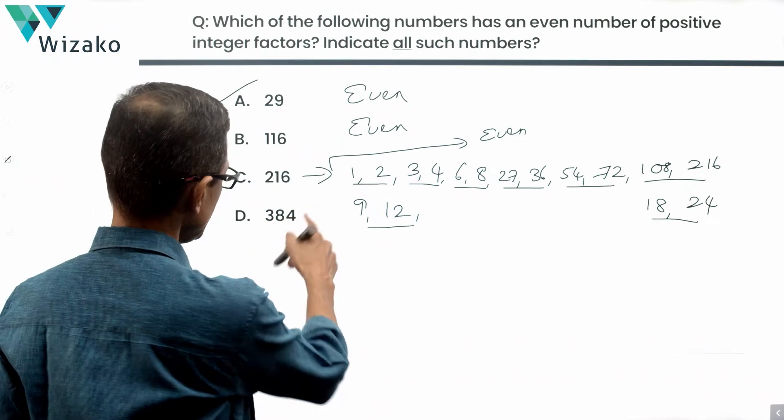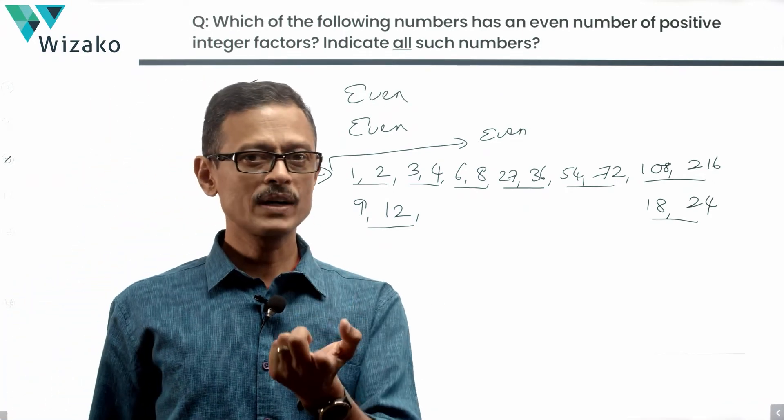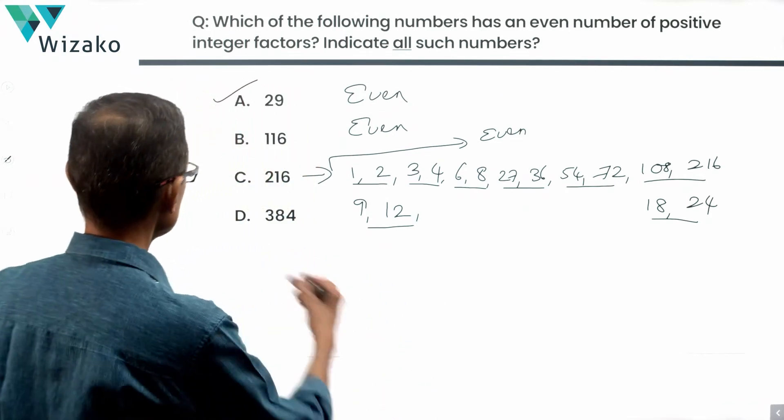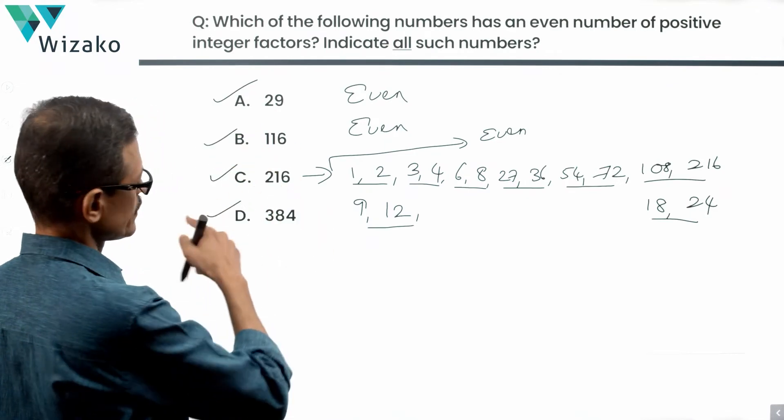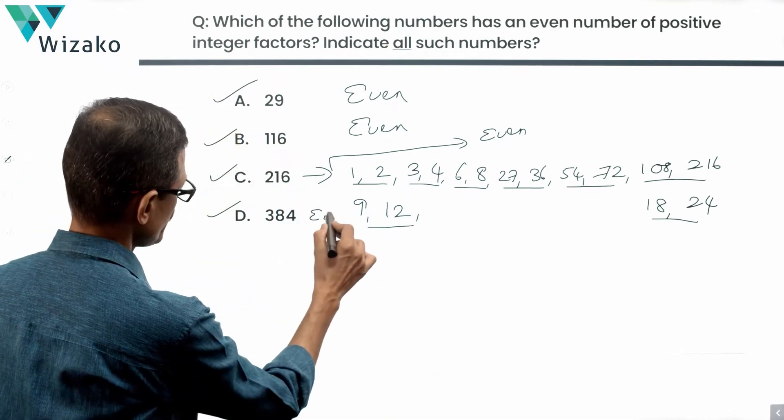Fourth answer option is 384. Is 384 a perfect square? No. 361 is 400, 384 is not. So this is also one of our answer options because it's not a perfect square. It'll have an even number of factors.